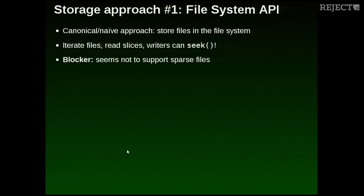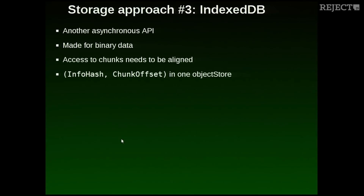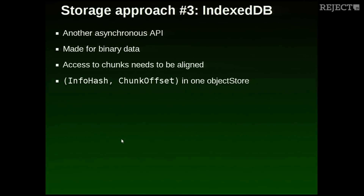My second approach was: I keep the contiguous data together, but whenever there is a hole, I create a new file. But I was still getting a lot of strange data races, and the traffic with that API was a multiple of the network traffic that was coming in. So I restarted from scratch and tried IndexDB, which is another asynchronous API, so it's nice and doesn't block like local storage.